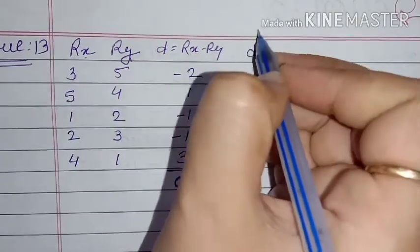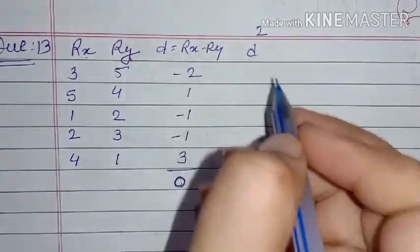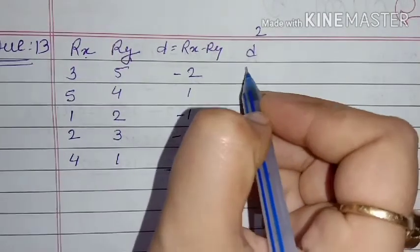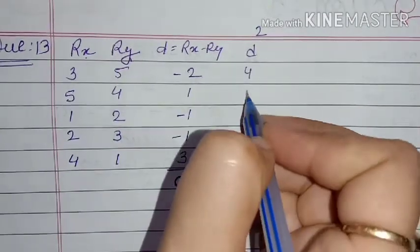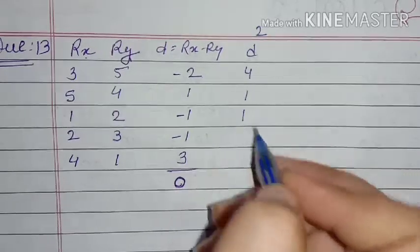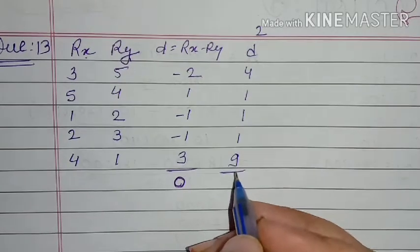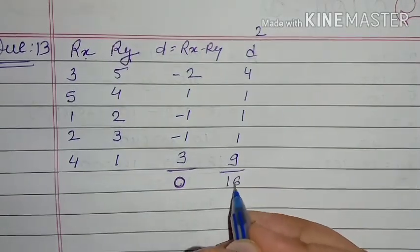Now next step is d square: (-2)² = 4, (1)² = 1, (-1)² = 1, (-1)² = 1, and (3)² = 9. So here our d square total is 16.